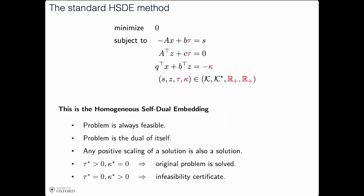The result is the homogeneous self-dual embedding, an attractive problem form because it is always feasible and it is the dual of itself. Once you find any feasible point and scale it, it remains a solution. If tau is positive and kappa is zero, you can construct a solution to the original problem. If tau is zero and kappa is positive, you can construct a certificate of infeasibility. That is the standard homogeneous self-dual embedding — but that is not what we do. We do something a bit different.